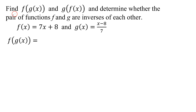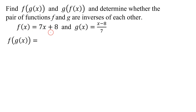In this problem, we need to find f of g of x and g of f of x, and determine whether the pair of functions f and g are inverses of each other. We are told that f of x equals 7x plus 8, and g of x equals x minus 8, all divided by 7.